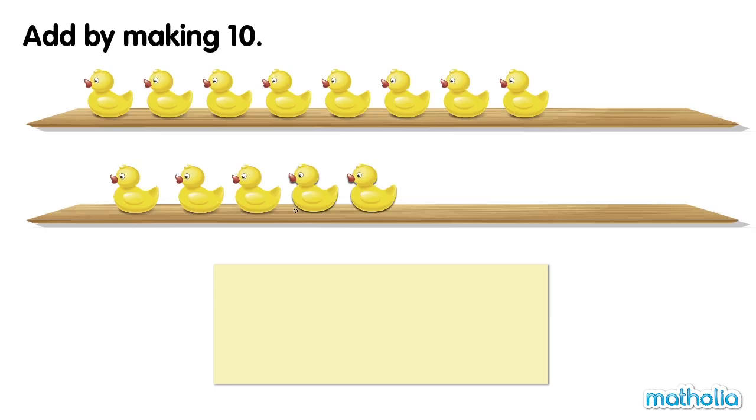How many ducks are there altogether? On the top row there are eight ducks. On the bottom row there are five ducks. Eight plus five.